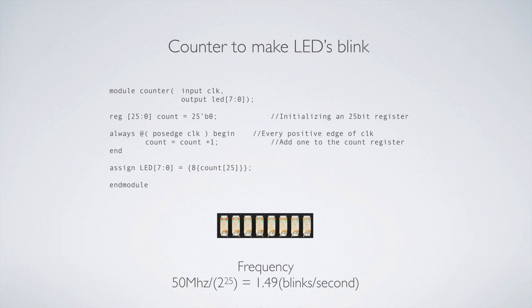I've introduced this always-at block, and what I'm going to do is say that all these registers are tied together in a string. I'm going to say count equals count plus one — count being this register. So I'm taking that bank of 26 registers and adding one to those. That very last bit will be one, then it'll move over to the two and the one will be zero, and then the one and the two will be one — so on and so forth, just as if you were counting in binary.